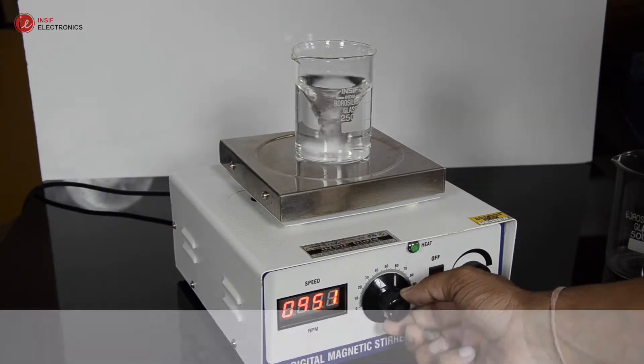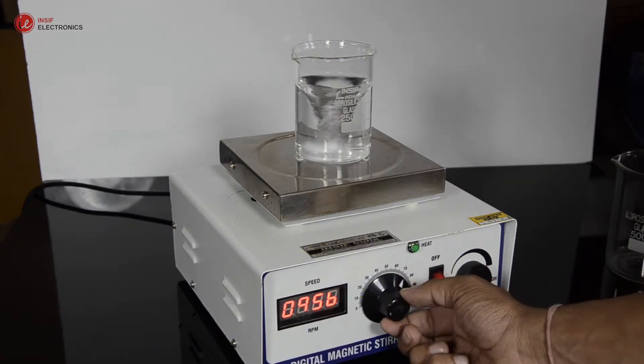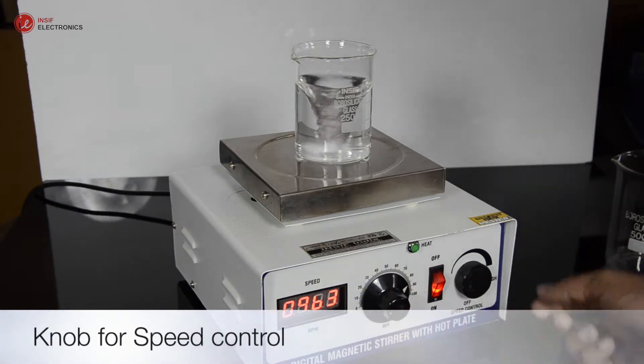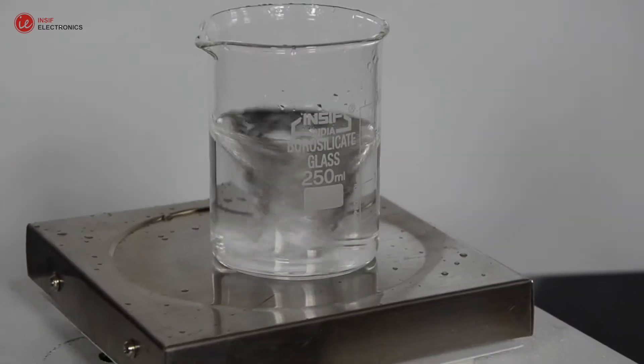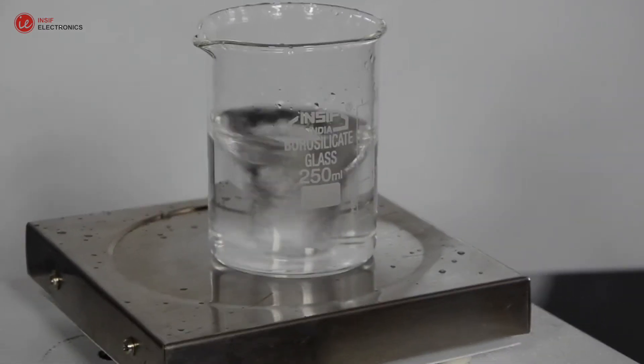It has LED display to show the speed of stirring, which can be controlled by rotating the knob. Similarly, we can easily adjust the temperature of the hot plate by rotating the knob of thermostat.